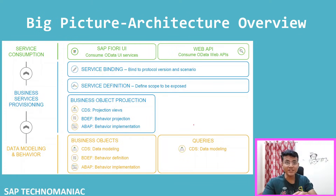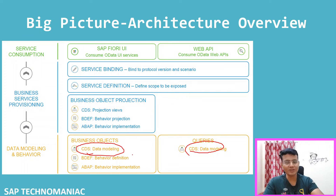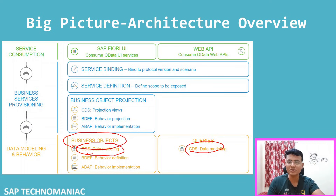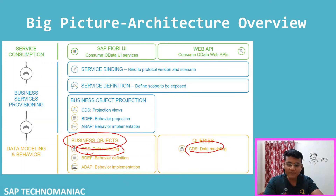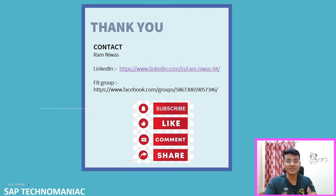In this video, we discussed the first part of data modeling and behavior, mainly focusing on the data modeling part, the business object concept, the composition tree, and the difference between composition and association. We did not cover behavior definition and implementation today - that will be in the next video. Please like this video and share it with others. Thank you and happy learning!